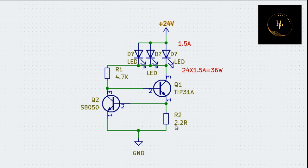Now we go to the next point: the current limiting resistance. The value of this resistance is 2.2 ohms. How can we calculate the voltage across this resistance? If you know, no problem. If you have any doubt, go to my video on resistance network or voltage divider circuit.